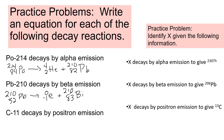Carbon-11 decays by positron. Carbon's atomic number is 6. Positron is 0 +1 electron. So: 1 plus some number is 6 — that's 5 — and the top number stays 11. Element number 5 is boron.